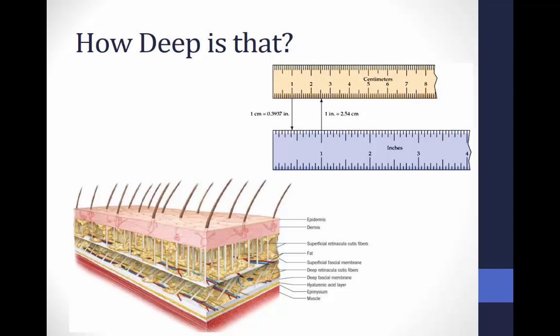The cellular changes associated with temperature are often the greatest benefit seen in thermal modalities — for example, with the use of ice to decrease metabolic activity following an acute injury. The rate of the body's chemical or metabolic processes is affected by changes in temperature. For every 1.8 degrees Fahrenheit or 1 degree Celsius change in tissue temperature, it results in a 13% increase for heat or decrease in cold of the tissue's metabolic rate.